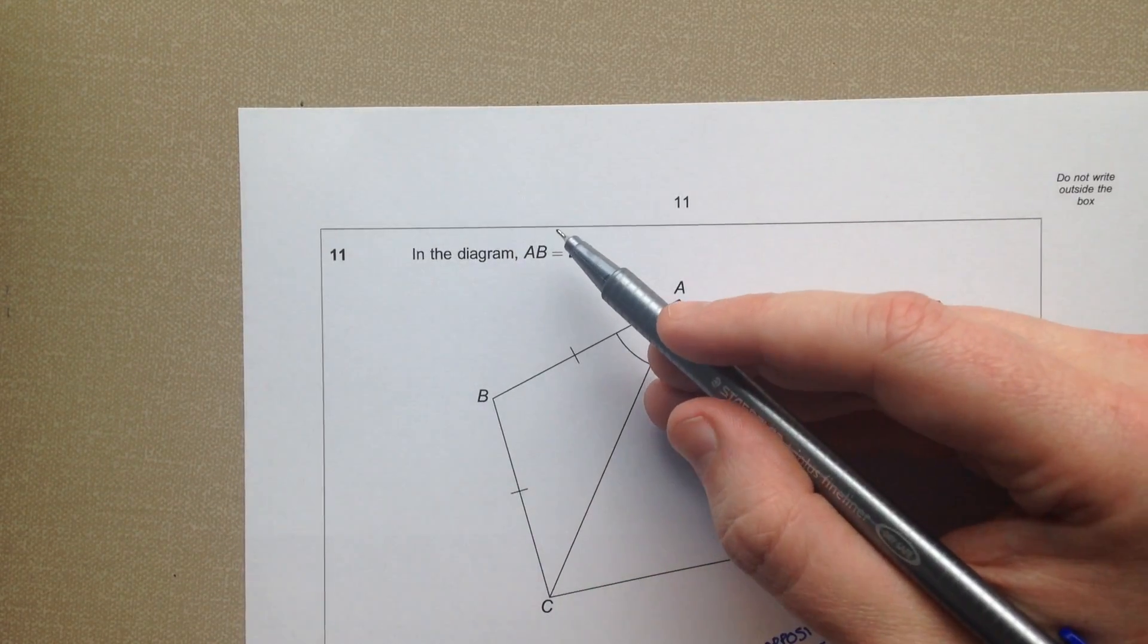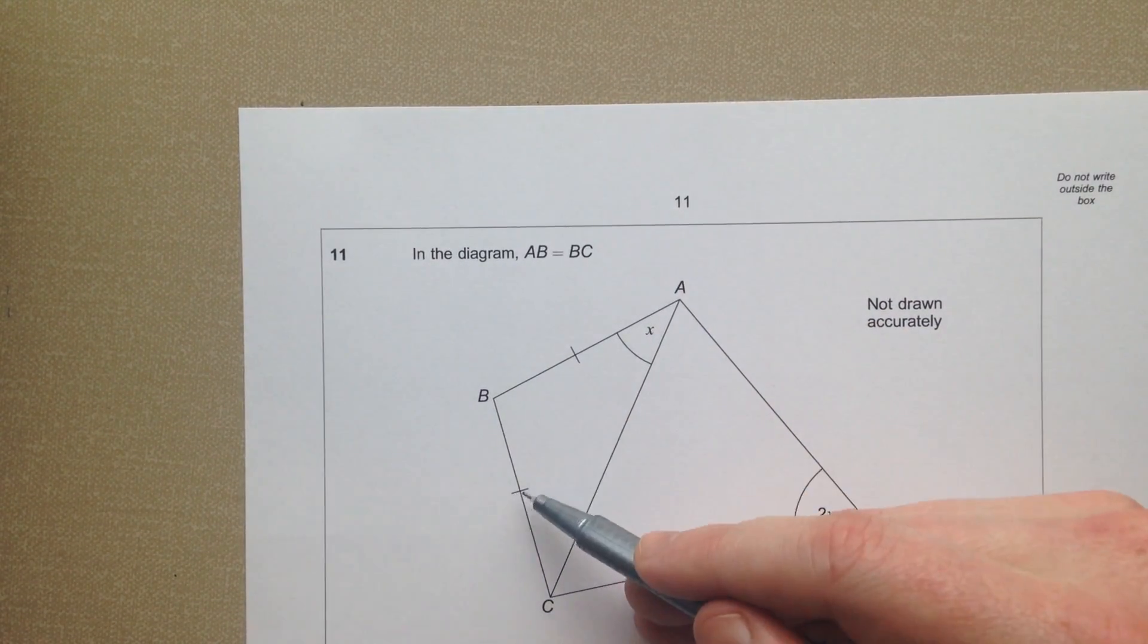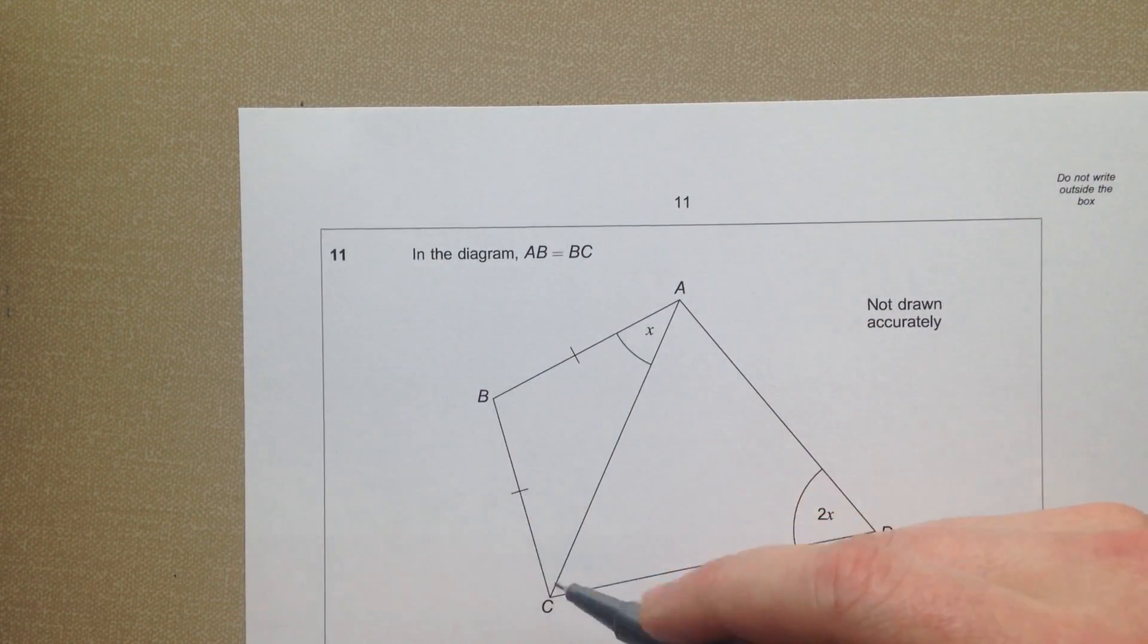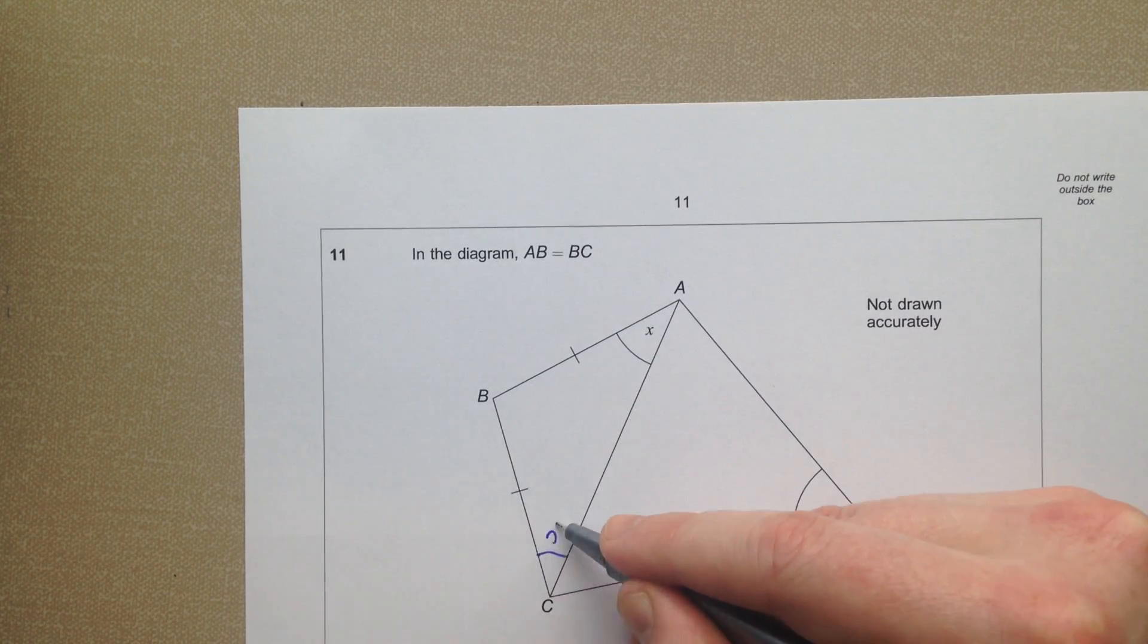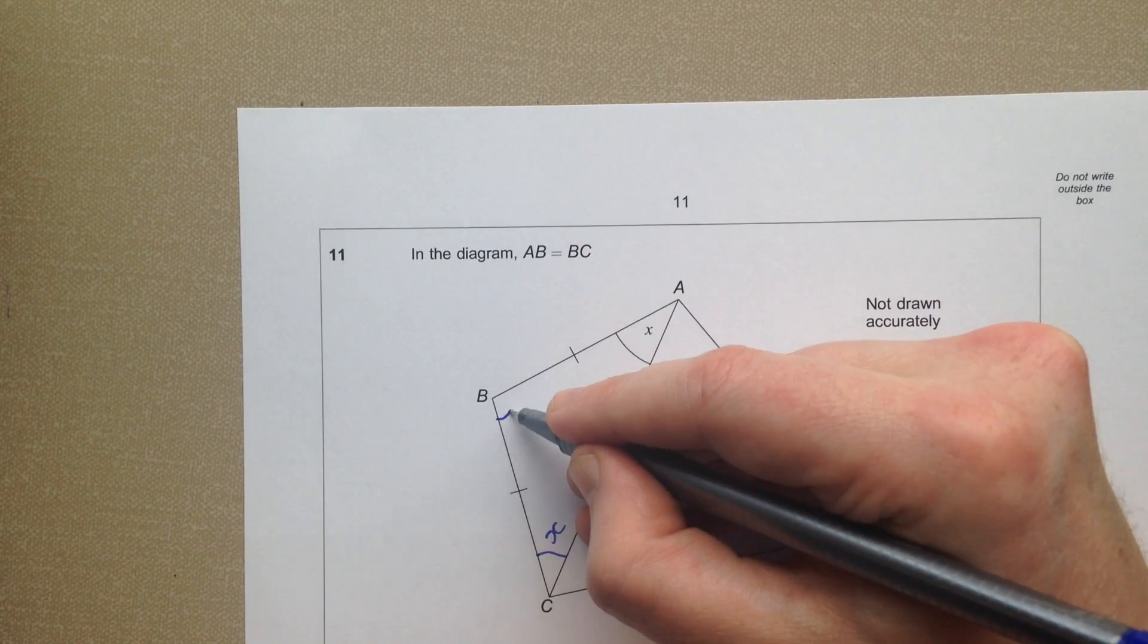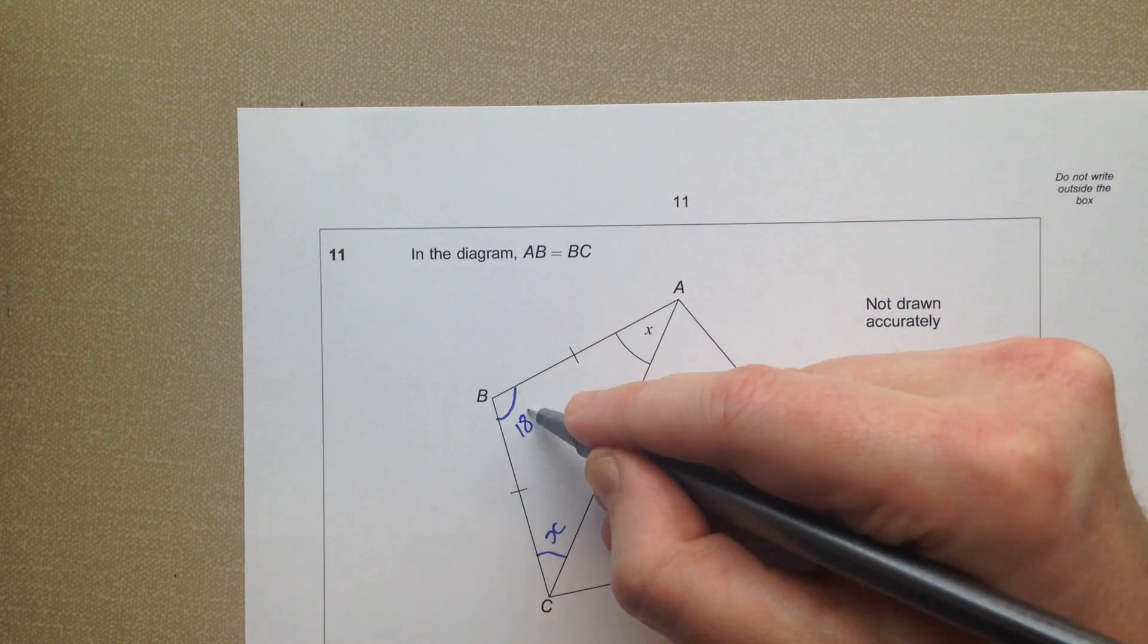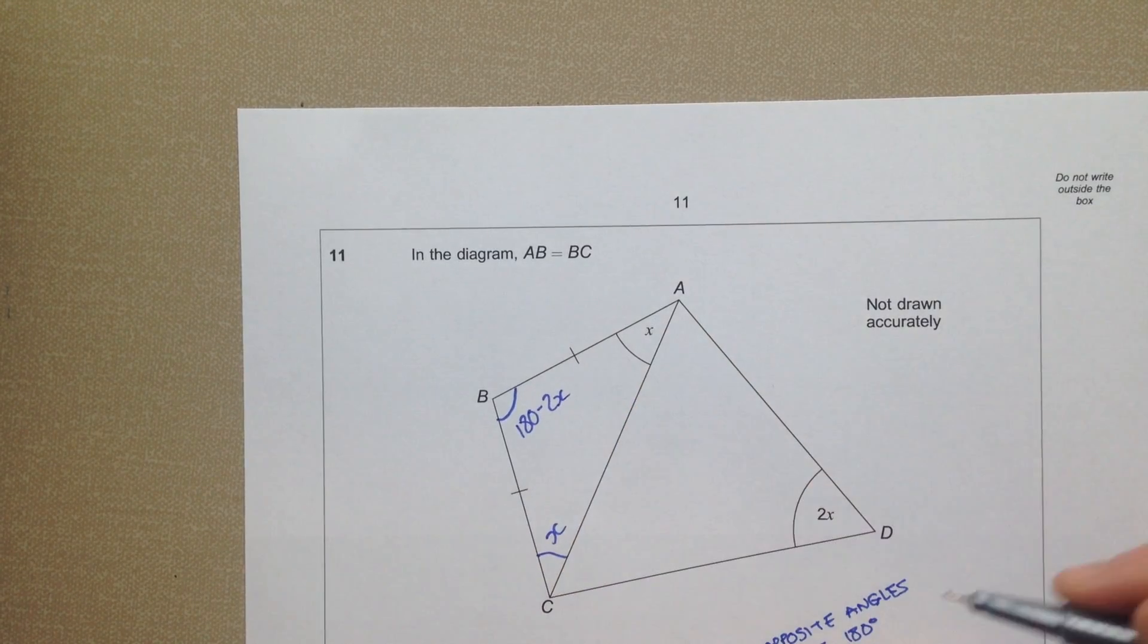Now the only bit of information shown in the question is AB and BC are the same. Here's those dashes to show you that. So this is an isosceles triangle. We know that angles on a triangle make 180 degrees, so this is going to be 180 take away those two angles.